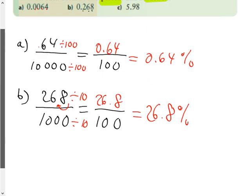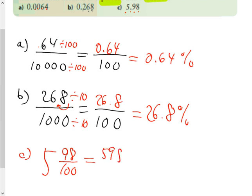And finally, your last one is C, which is 5 and 98 hundredths, which is 5 and 98 hundredths. That's what it would be as a mixed fraction. As an improper fraction, it's a beautiful thing, because it's 598 over 100, which is what a percent is. So it's 598 out of 100, which is a percent. It's 598%.